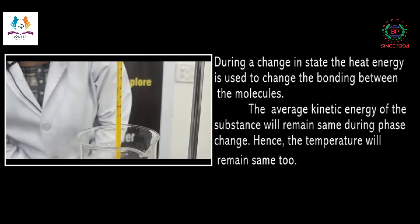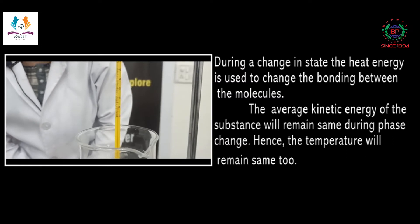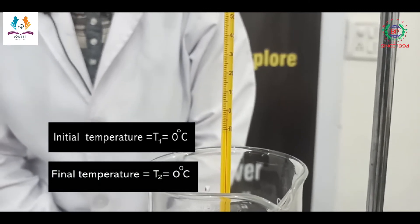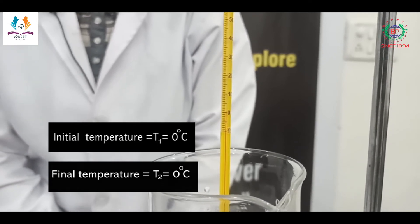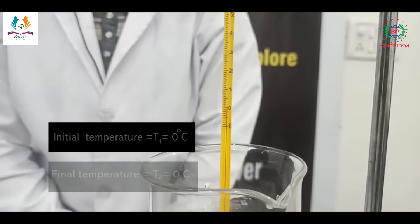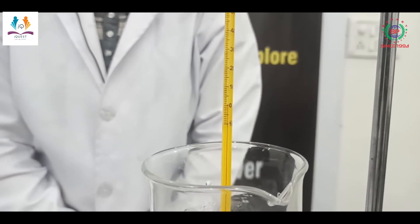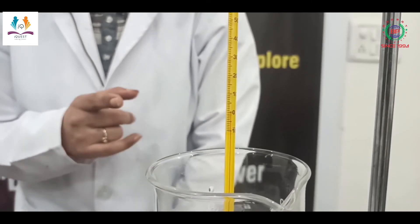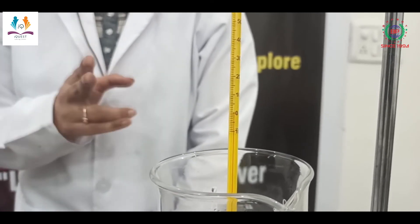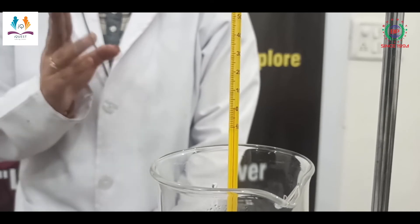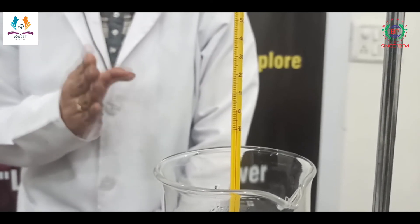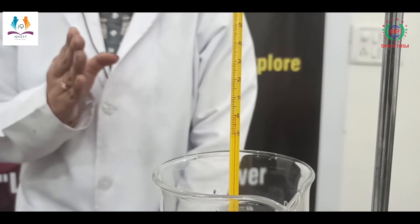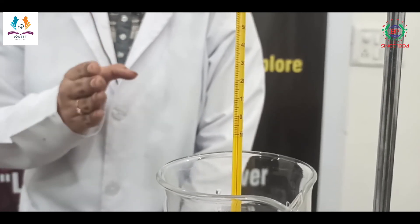Now note down the temperature. It is still 0 degrees Celsius and our complete ice has been converted into water. This temperature I will denote by T2. T1, the temperature noted initially, was also 0 degrees Celsius. When I take the mean of these two temperatures — both having the same value of 0 degrees Celsius — I get the mean as 0 degrees Celsius, which is the melting point of ice.